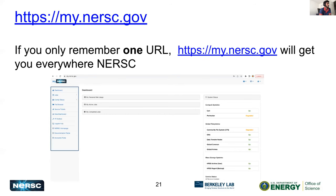Next we'll talk about myNERSC. myNERSC is basically one place where you can find everything about NERSC — the status and the state of all NERSC resources. If you go to my.nersc.gov, on the right-hand side you're going to see the system status, and on the left-hand side you'll see a navigation where you can look at all your jobs and center status.